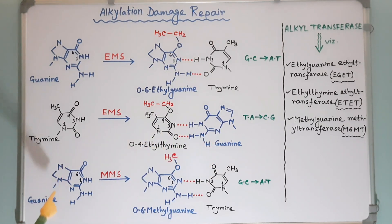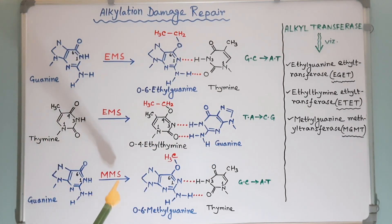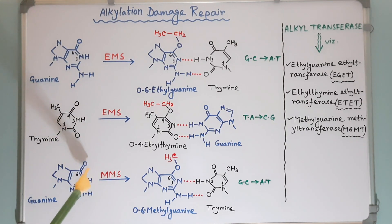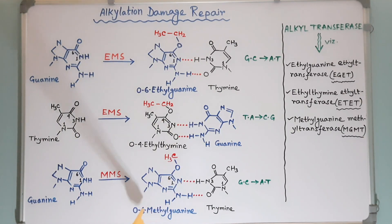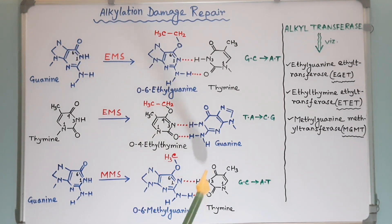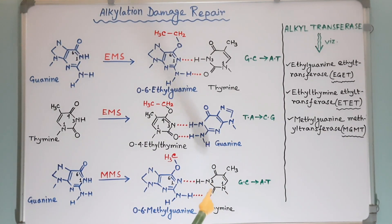In the third diagram, MMS adds a methyl group to the oxygen at position 6 of guanine to produce O6-methylguanine. This O6-methylguanine combines with thymine instead of cytosine.